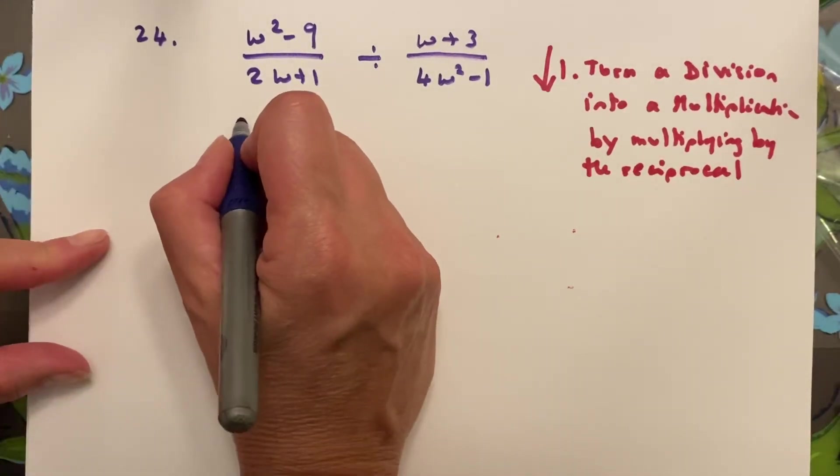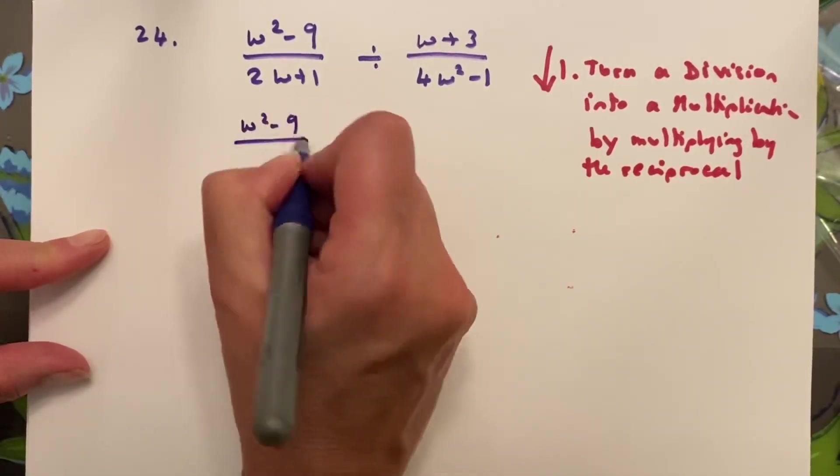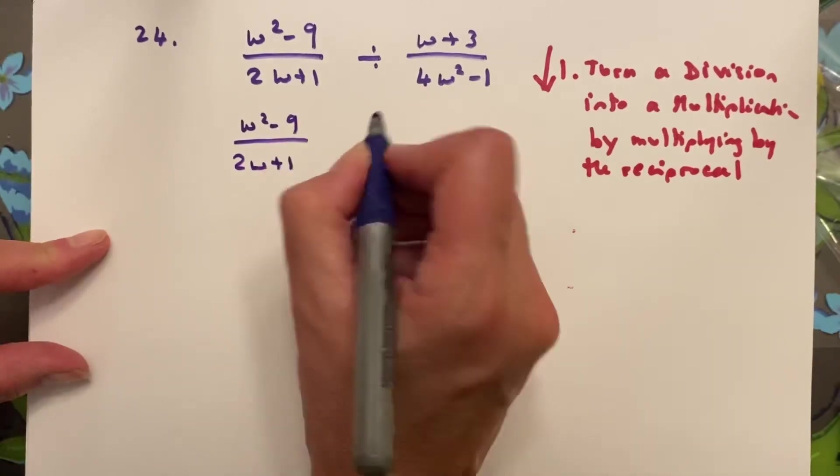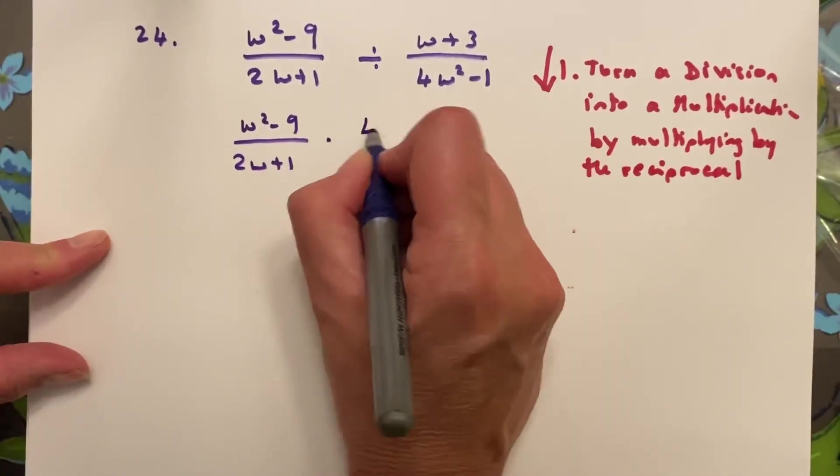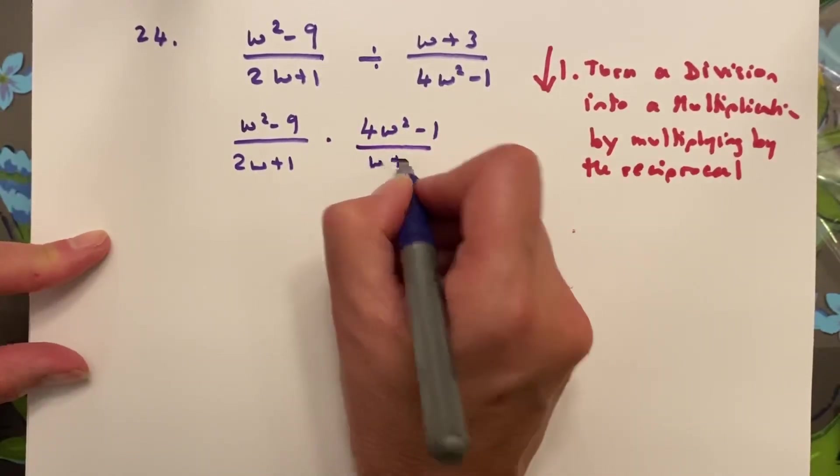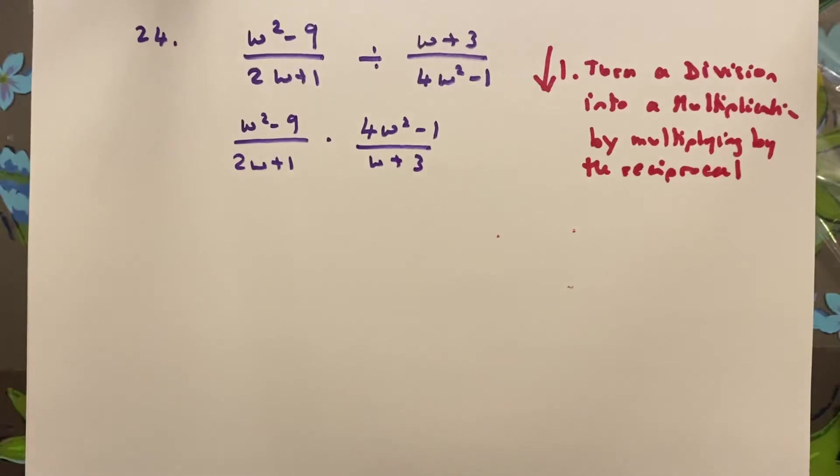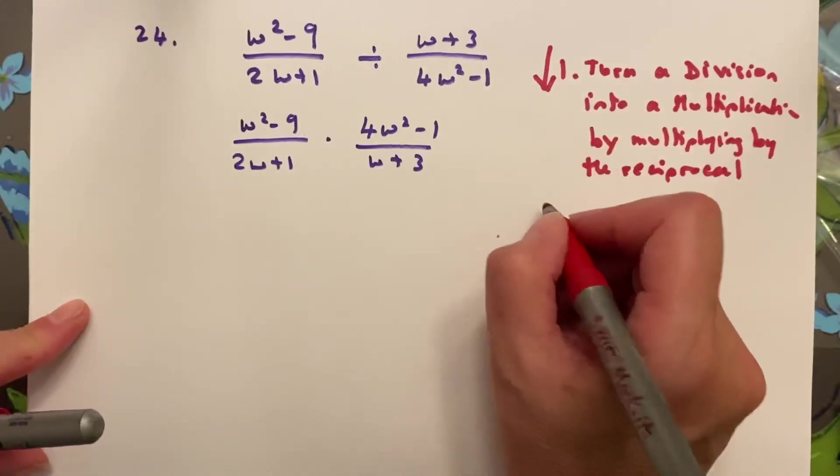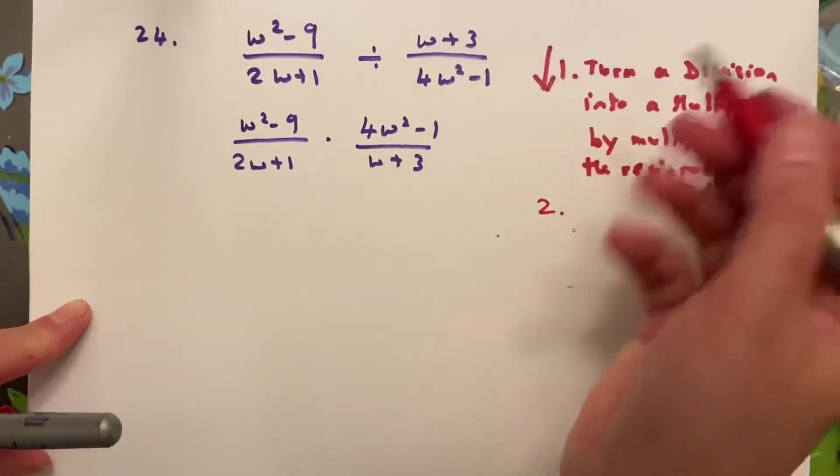So first you turn the division into a multiplication by multiplying by the reciprocal, which means w squared minus 9 over 2w plus 1 is now multiplied by 4w squared minus 1, which becomes a numerator, and w plus 3 becomes my denominator. So that was my first step. My second step is the same as my first step before because now I just have a multiplication problem, and I'm going to factor - factor every single thing that I can.